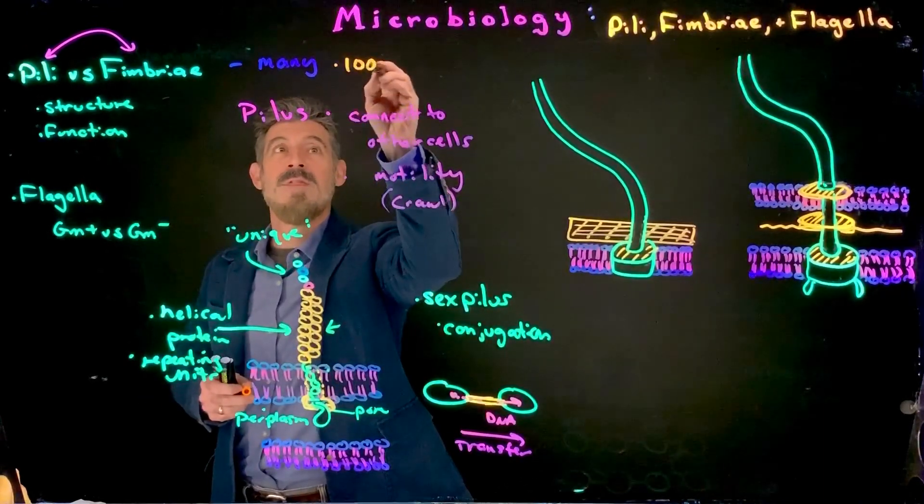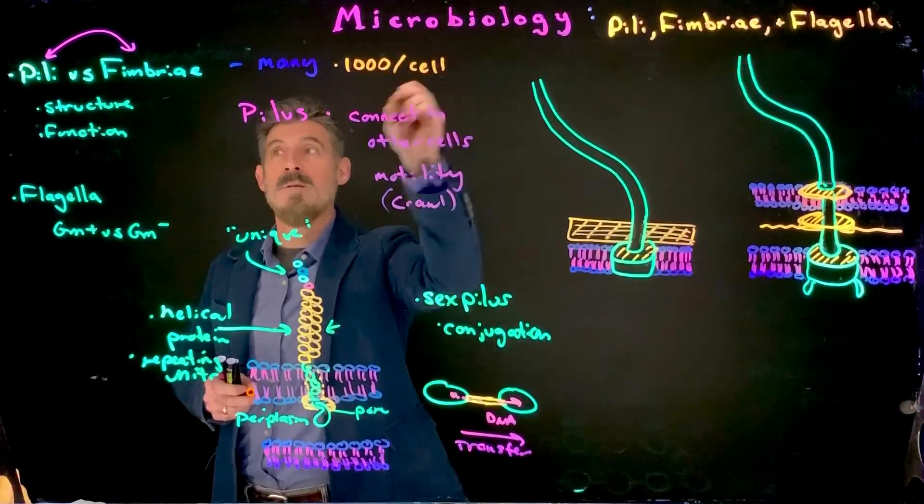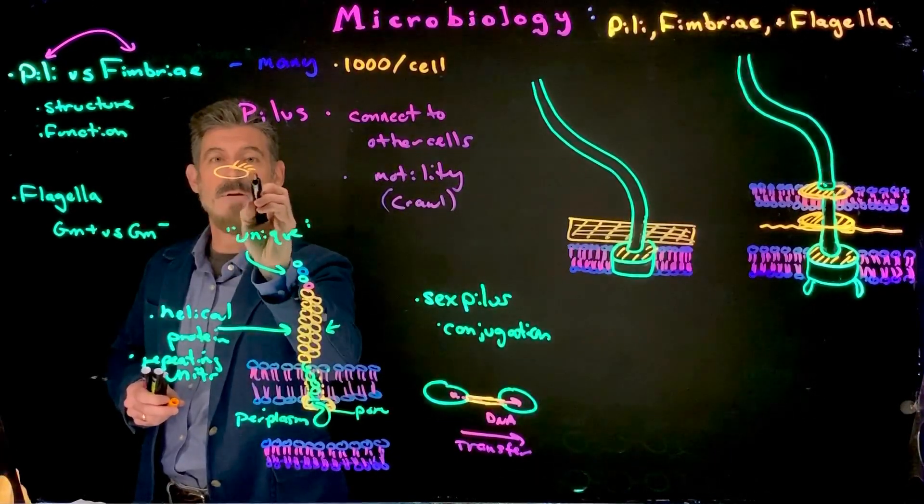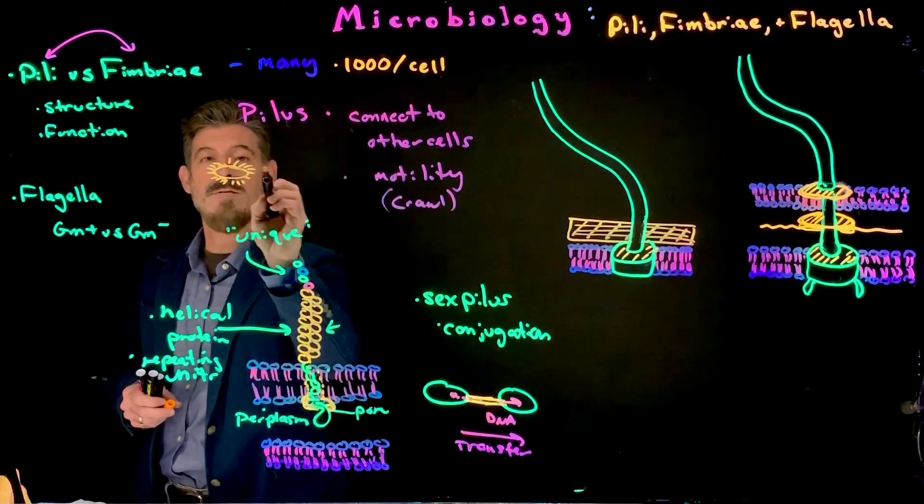Usually there's many. There can be, you know, a thousand per cell. So a thousand little fimbriates, these little hair-like structures. So you have the cell, and then you have all these little structures sticking off it.